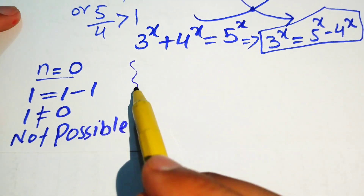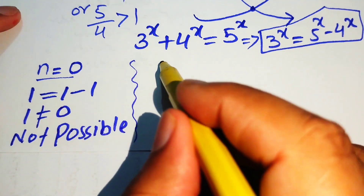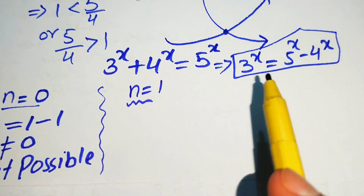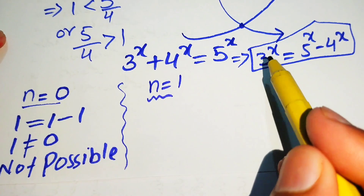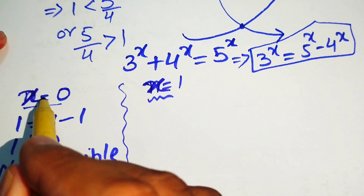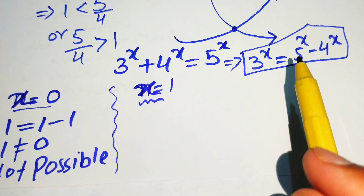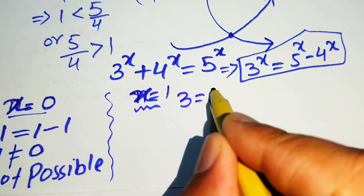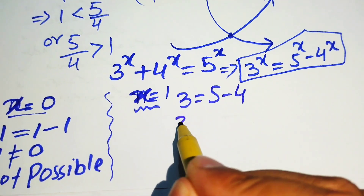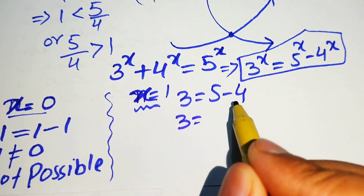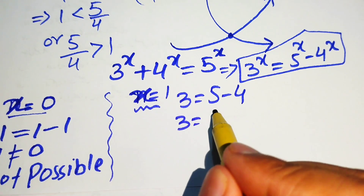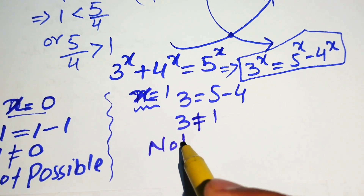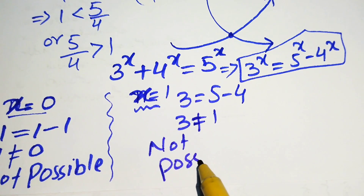Now we check at x equals 1. Substituting x = 1 into the equation gives 3 equals 5 minus 4, which equals 1. But 3 is not equal to 1, so this is again not a possible case and we reject x = 1.